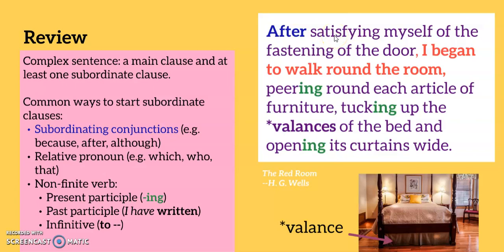Here, the writer uses the first subordinate clause to establish a sequence of actions. First the writer fastened the door, then he began to walk round the room. This suggests that he's feeling uneasy, and this idea is developed through the use of the present participle with peering, tucking and opening. These are all action words, and they quicken the pace and suggest that he's afraid.